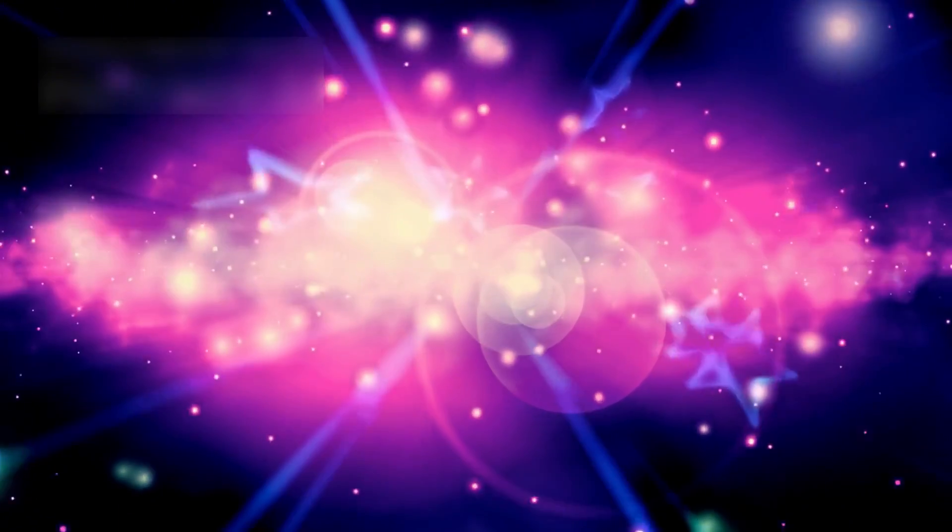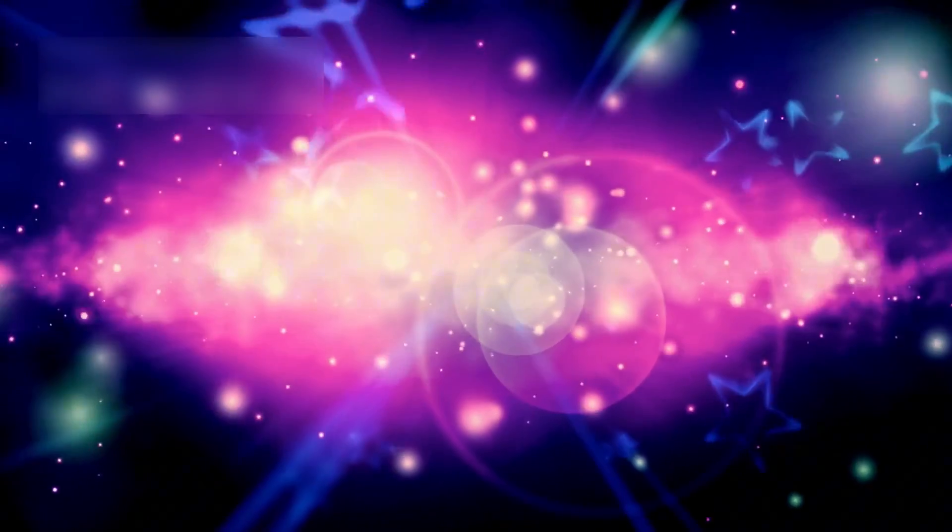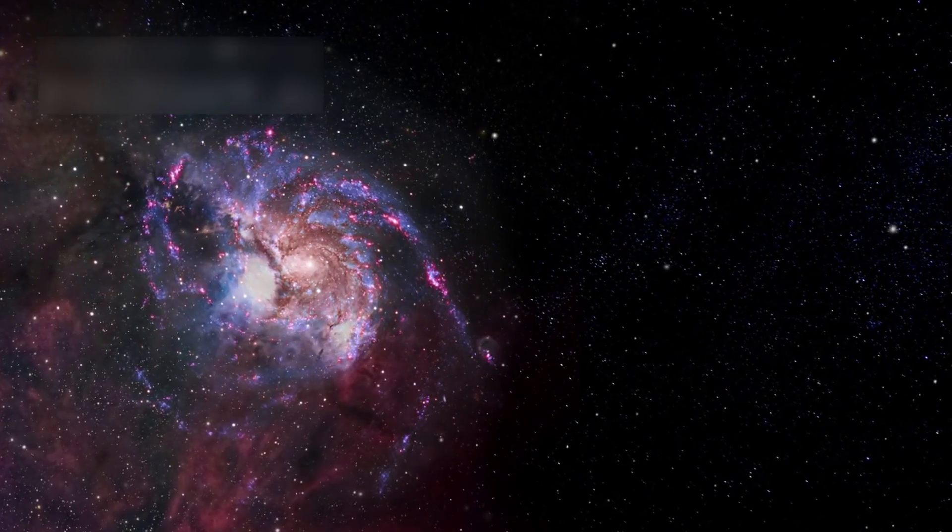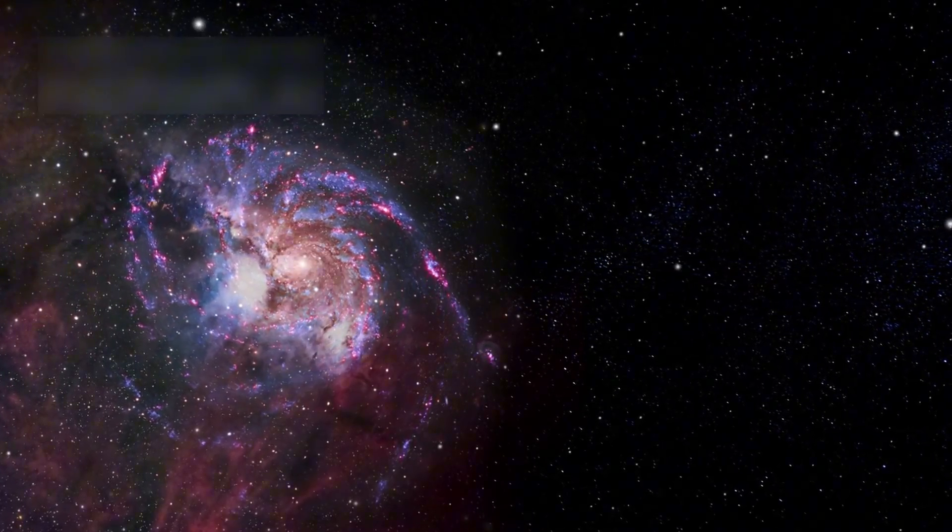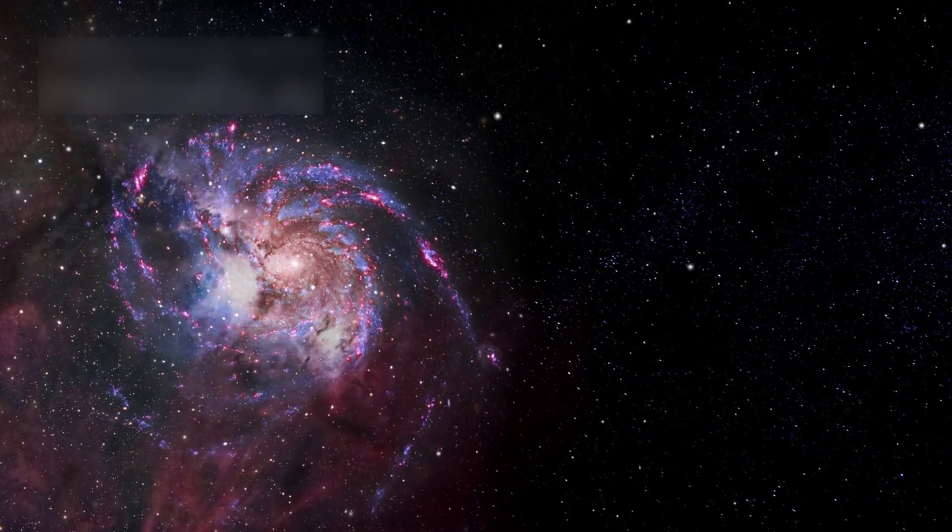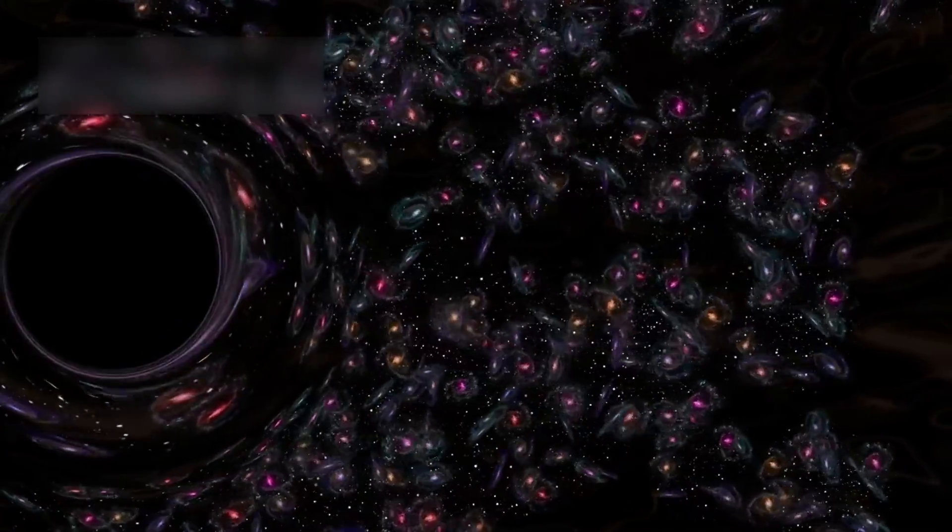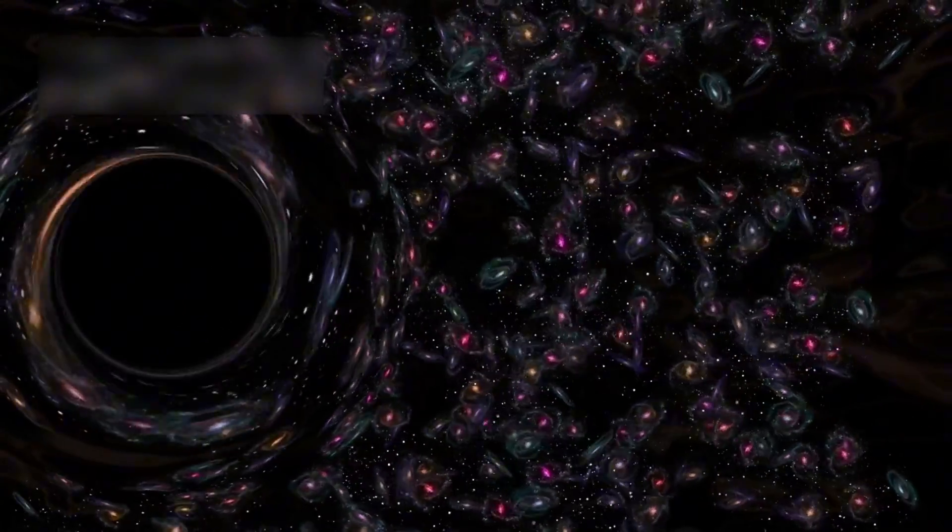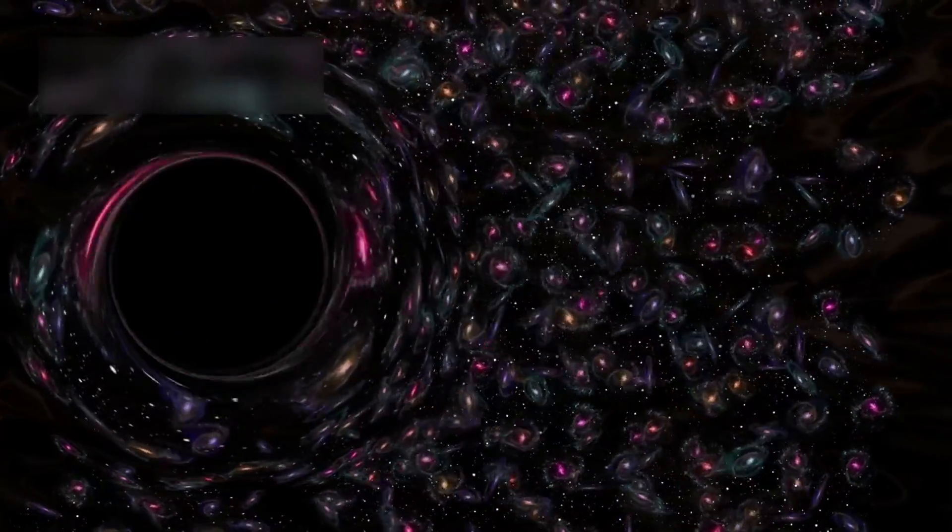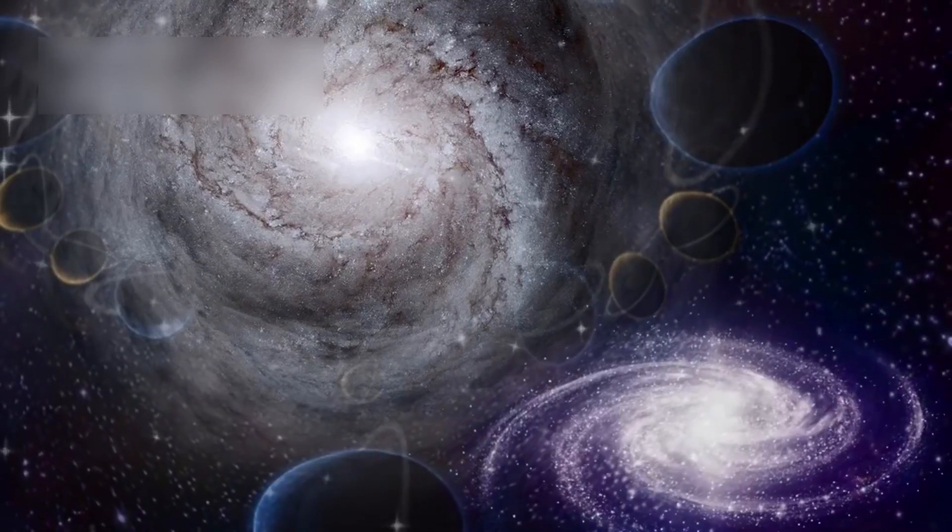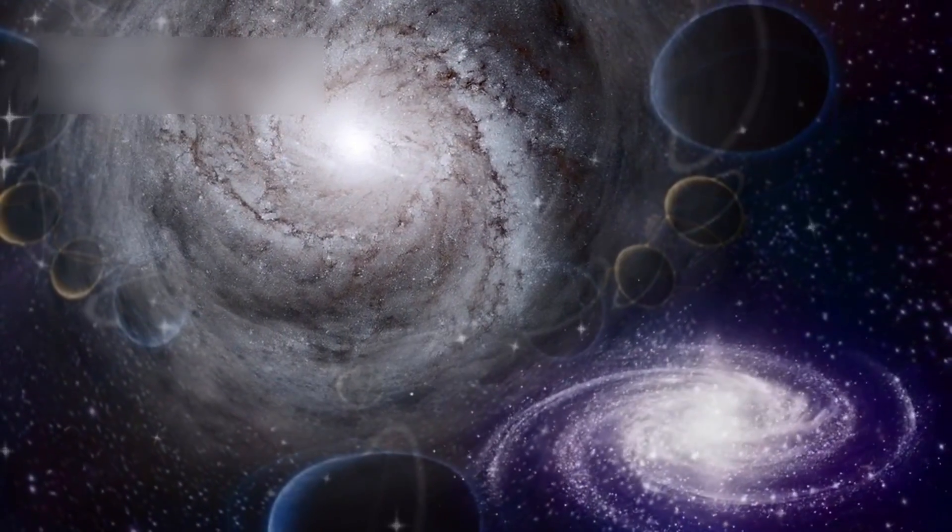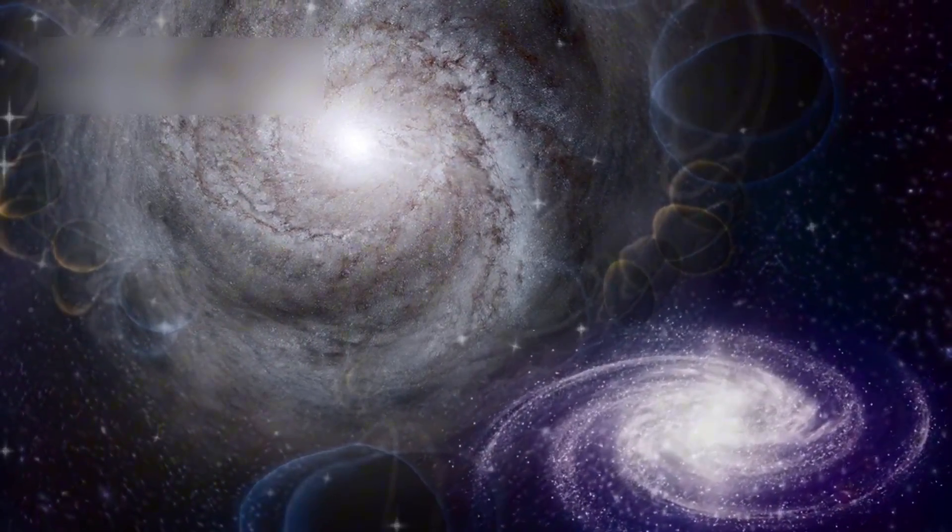Instead, Webb found something completely unexpected. Not chaos or simplicity, but fully formed galaxies already spinning and glowing with stars. These galaxies had spiral arms, star clusters, and even supermassive black holes. They were complex and organized, appearing when the universe was still very young.